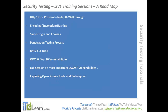The live training roadmap: first we will talk about protocol basics, encoding, encryption, hashing, same origin, and cookies, penetration testing processes, basic CIA triad, and OWASP top 10 vulnerabilities, and a lab session on the most important OWASP vulnerabilities. We will also do an exploration on open source tools available in the market and techniques to spot security vulnerabilities.